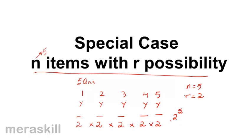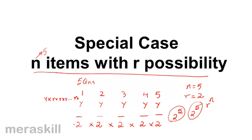The number of ways in which he can attempt is 2 raised to 5. In general, it is r raised to n — that is r×r×r×...×r, n times — because there are n items each with r possibilities. So there are r raised to n ways in which these questions can be attempted.